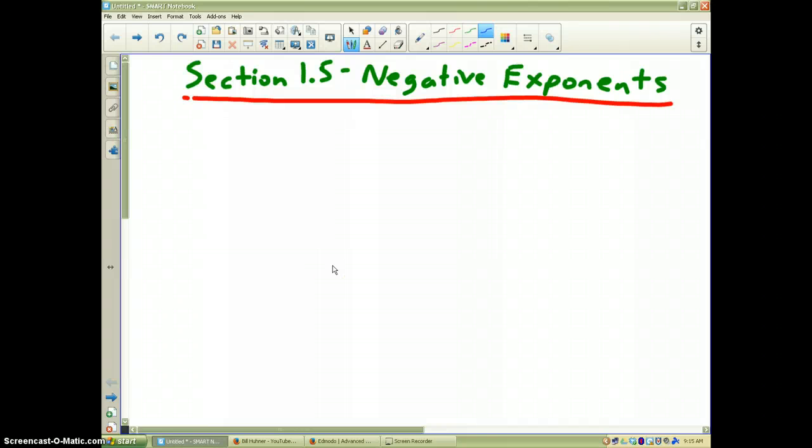The second example in section 1.5 deals with negative exponents. Now, when you see negative exponents, for instance, let's say you have 2 to the negative 3 power.